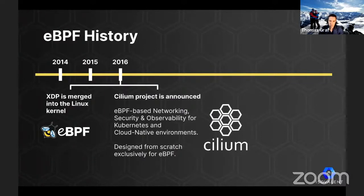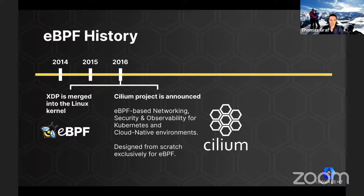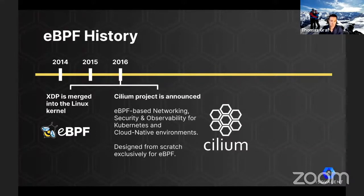In 2016, XDP was merged into the Linux kernel, enabling a high-performance data path where eBPF can run directly in the driver of a network device, as close to the hardware as possible. This is what later unlocks the development of several load balancers now used in some of the largest data centers today. It was also the year we first announced the Cilium project. Cilium had and still has a very simple goal: provide networking, security, and observability for Kubernetes and cloud-native environments using eBPF. It has been designed from scratch to leverage all the powers of eBPF in a native way.